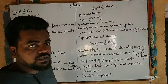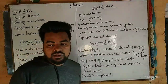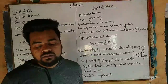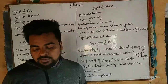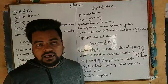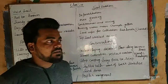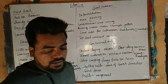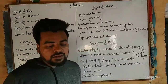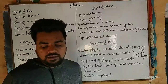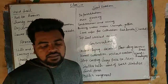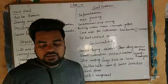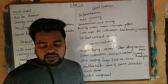The land becomes unfit for cultivation and is known as bad land. In the Chambal Basin in Rajasthan, such lands are called ravines.